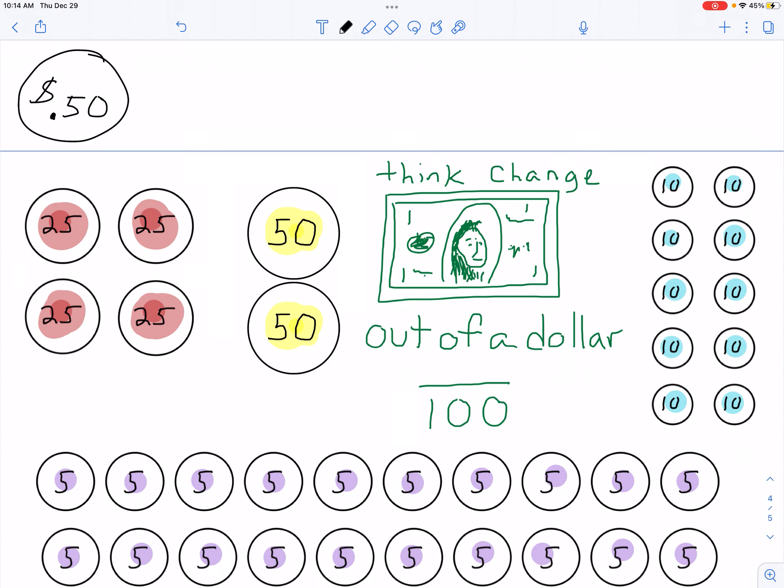So let's look at 50 cents in particular here. And when we think of fractions and money, you just need to think change. You need to realize that everything is out of a hundred when we're talking a dollar bill. So there's a hundred pennies in a dollar bill. We can talk fractions out of a hundred.